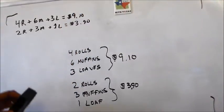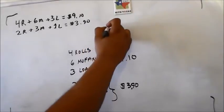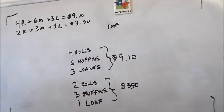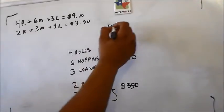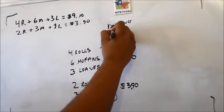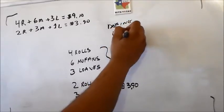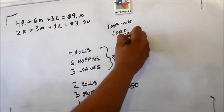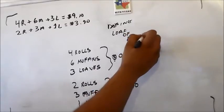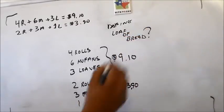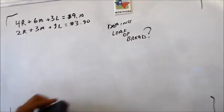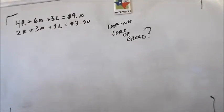What we're going to do is define how much the cost of a loaf of bread is. I'll mark that with a question mark so we know what we're solving for, and then we can set up our system of equations.